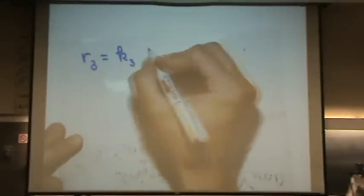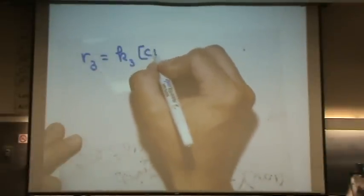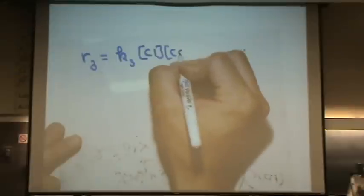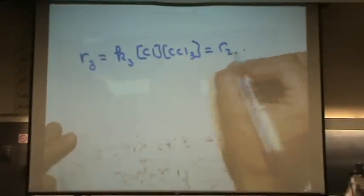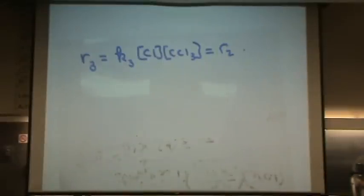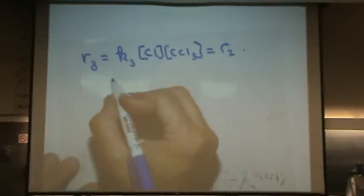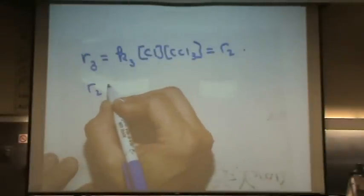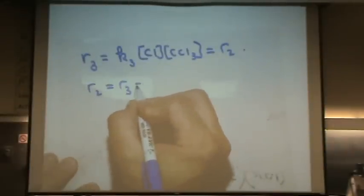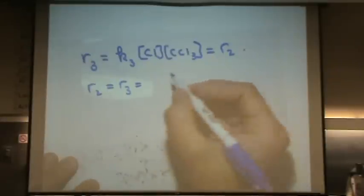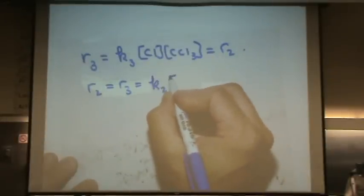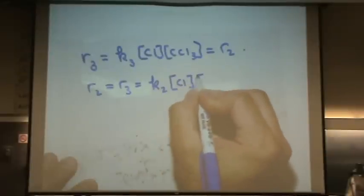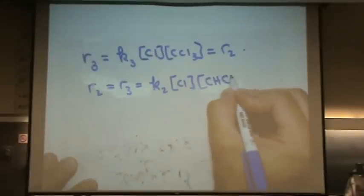That's K3 Cl CCl3. And you saw from the pseudo steady-state hypothesis, this equals rate 2. Rate 2 equals rate 3 from the previous page. So let's write out rate 2. Rate 2, which equals rate 3, is equal to K2 times Cl times CHCl3.